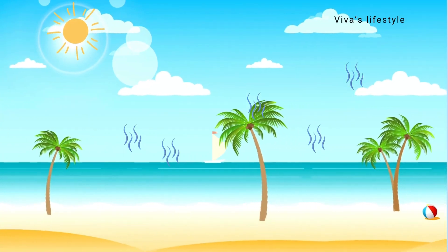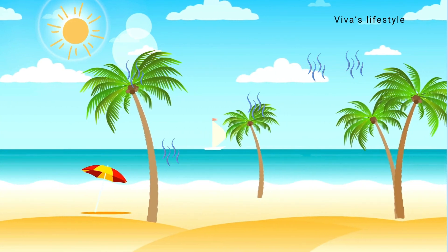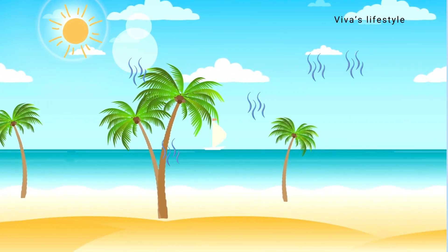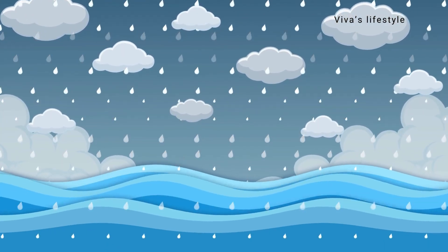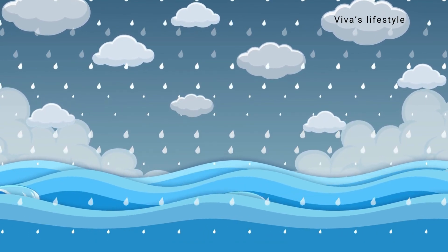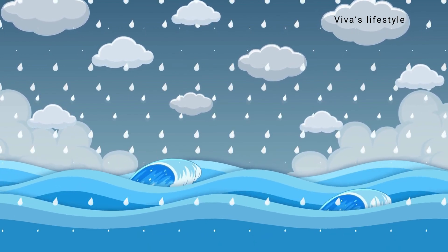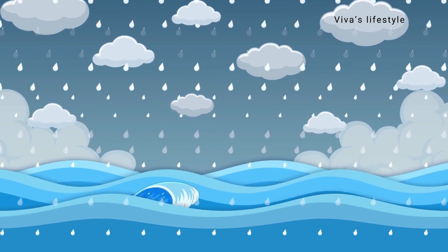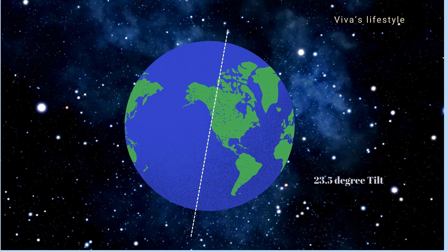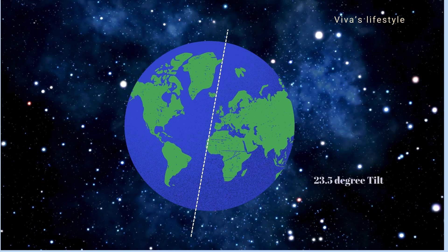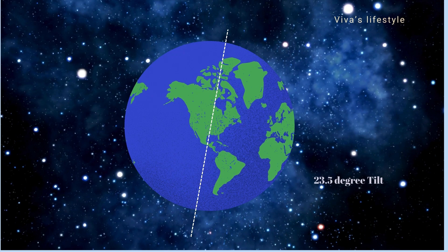More than 80% of global evaporation occurs from the ocean, and around 70 to 80% of global precipitation also occurs over the ocean. That's the reason the ocean plays a big role in the water cycle. This water cycle is a biogeochemical cycle and will keep occurring for billions of years as long as Earth rotates around its axis at 23.5 degrees and orbits around the Sun.